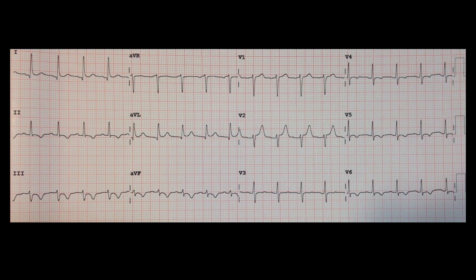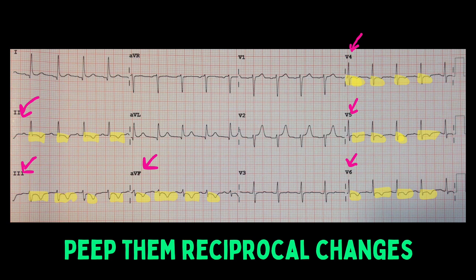A lack of reciprocal changes does not rule out a STEMI. What reciprocal changes do for you is they provide the nail in the coffin that your diagnosis of STEMI was correct. So let's look back at that subtle lateral wall MI. The ST elevation is in leads 1 and AVL. We see signs of ischemia in other leads — T wave inversions in leads 2, 3, AVF, V4, V5, and V6. These are the reciprocal changes, and that is your reassurance that your diagnosis of a lateral STEMI was correct.